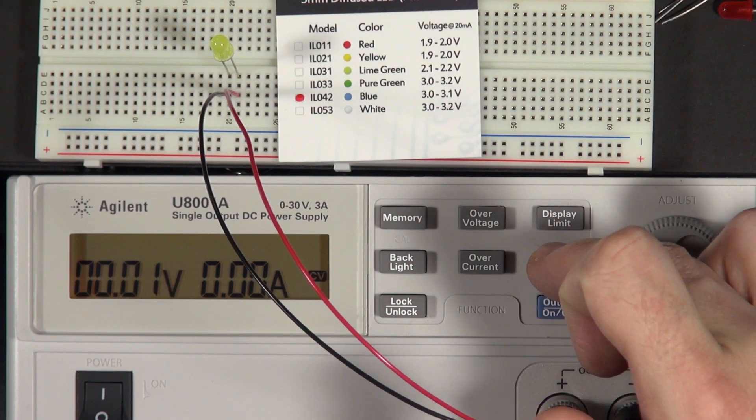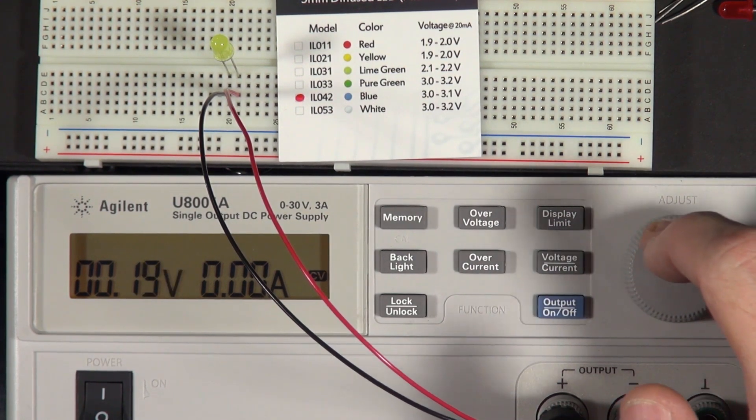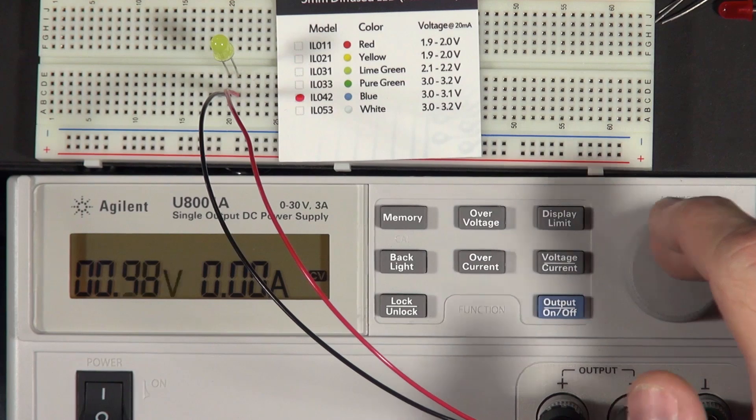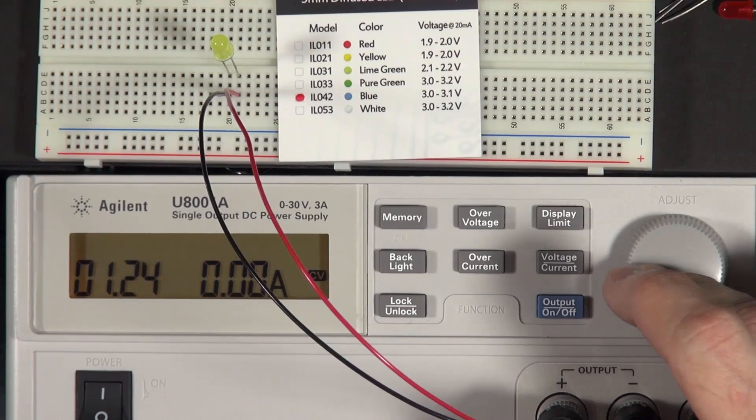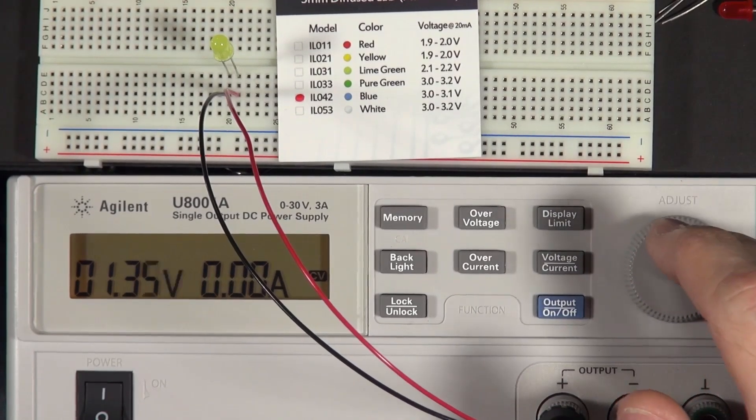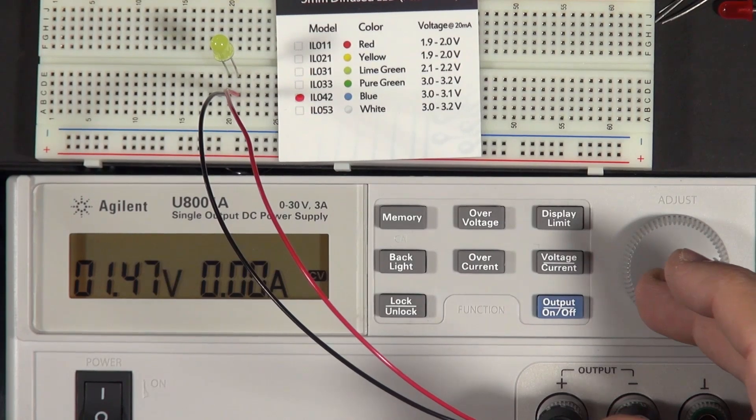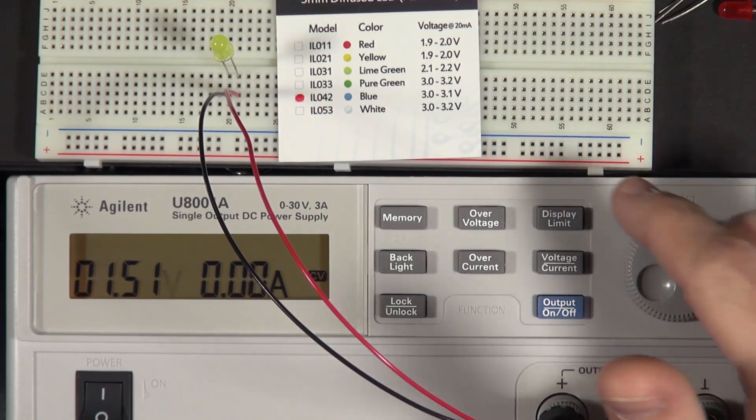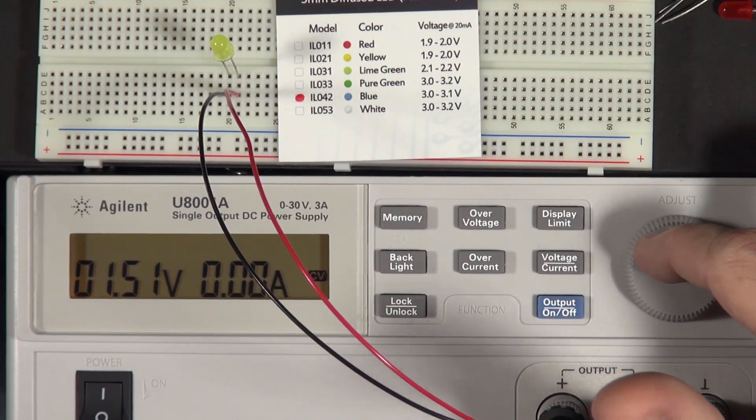So let's start to increase the voltage and see what happens. So I can slowly increase this voltage, and here we're just over 1 volt, and the LED doesn't appear to be on at all. In fact, as we get to, here we're almost at 1.5 volts. We're at 1.5 volts, the LED is still not on. But of course, it says it wants 1.9 to 2 volts, so we'll keep going here.